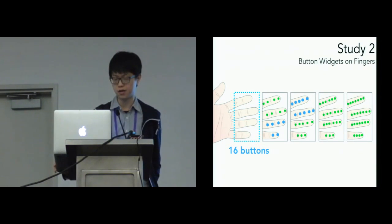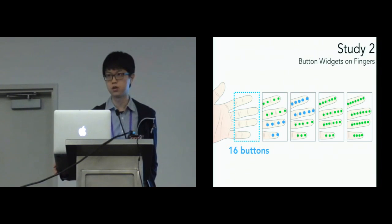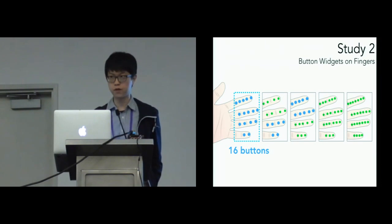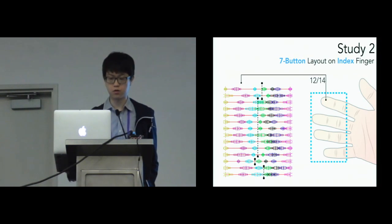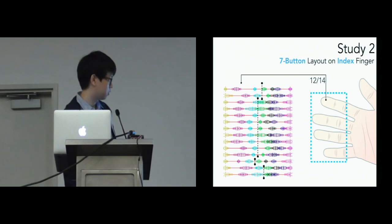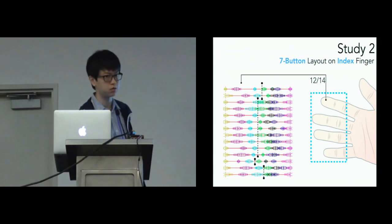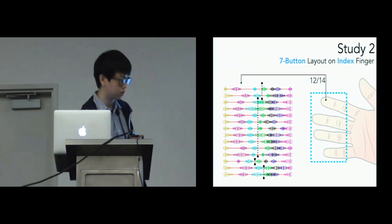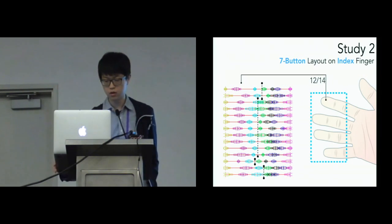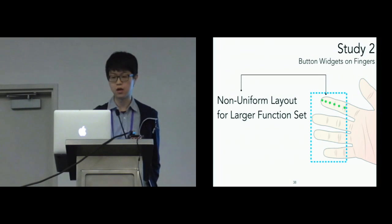This provides huge input power allowing various interactions. If you want to provide even more input power, there's another interesting phenomenon: looking at the four-button layout of the index finger, most participants could perfectly divide buttons on the first finger segment, but could not well recognize buttons on the second finger segment. This suggests that for larger function sets, a non-uniform button layout might be more suitable.